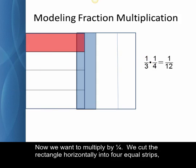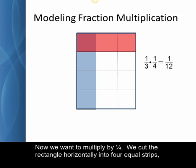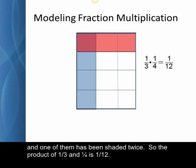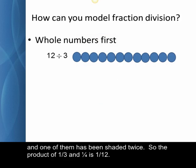Now we want to multiply by one-fourth. We cut the rectangle horizontally into four equal strips and shade in the top one-fourth. We see that the rectangle now is divided into twelve equal parts and one of them has been shaded twice. So the product of one-third and one-fourth is one-twelfth.